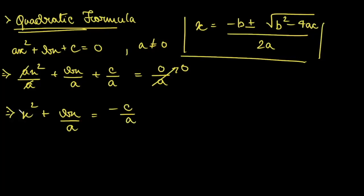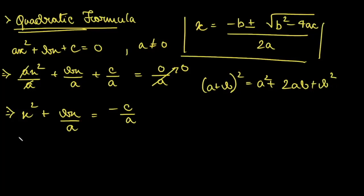Now we want the terms on the LHS to be in the form of a plus b whole square, where a plus b whole square equals a squared plus 2ab plus b squared. So for the terms in the LHS to be in that form, we will try to do that.